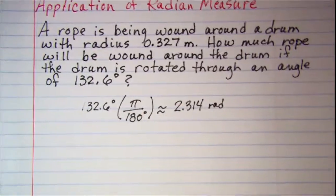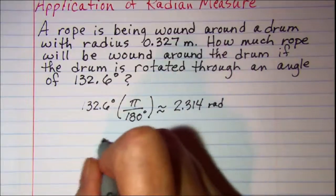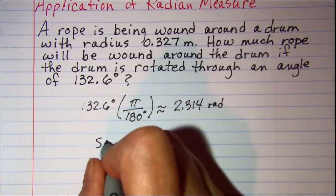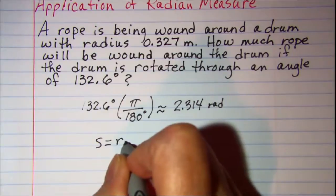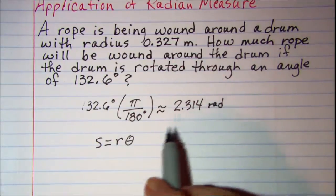Then we know that the formula for finding the arc length is s equals r, the radius, times theta, which is the central angle in radians.